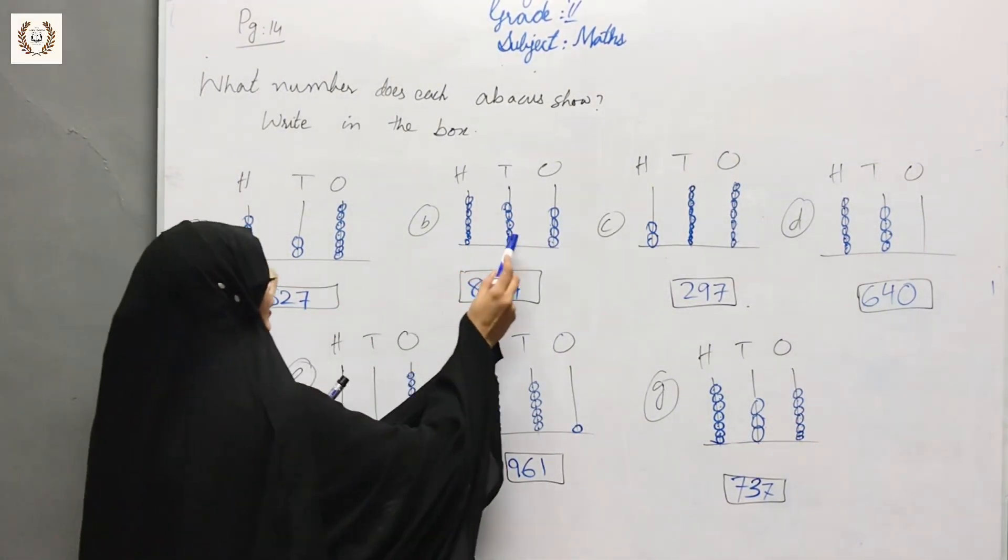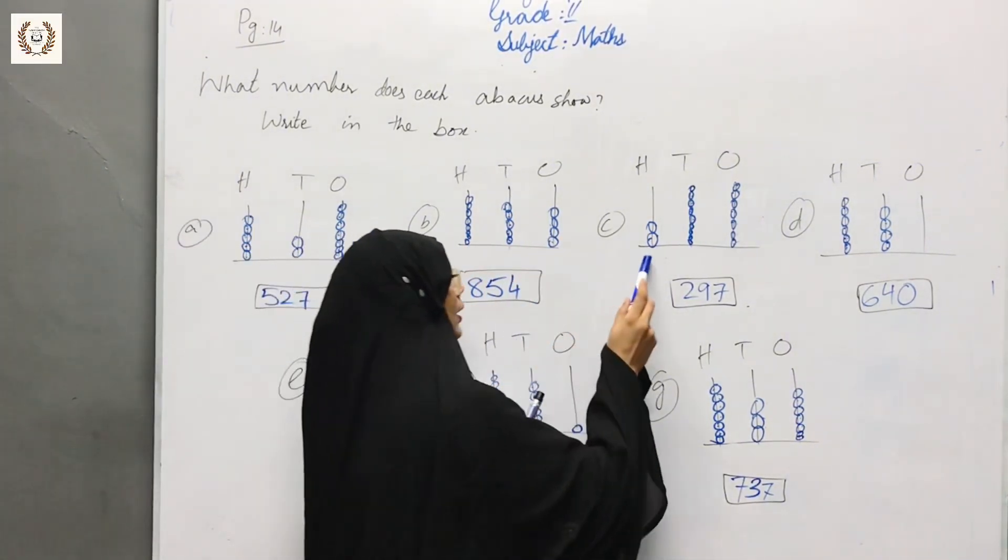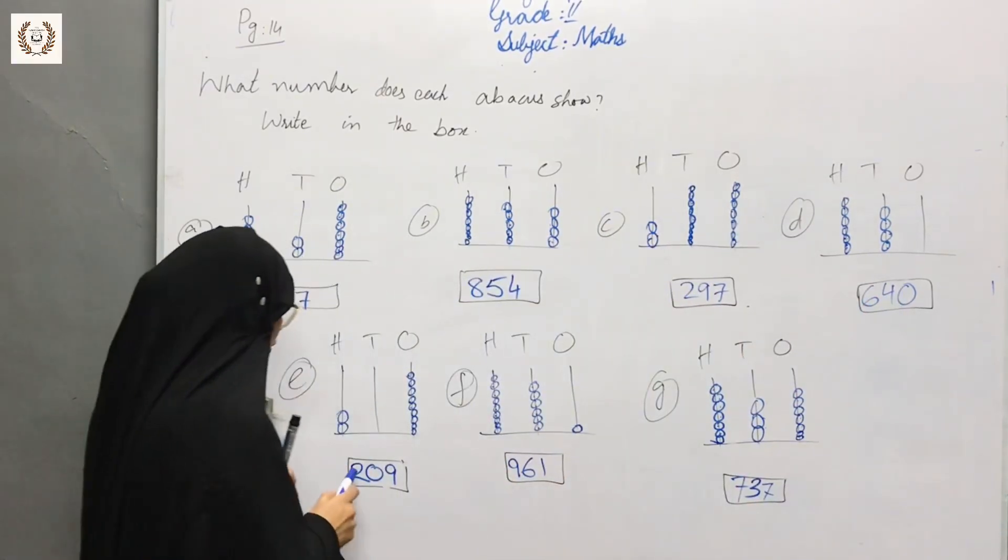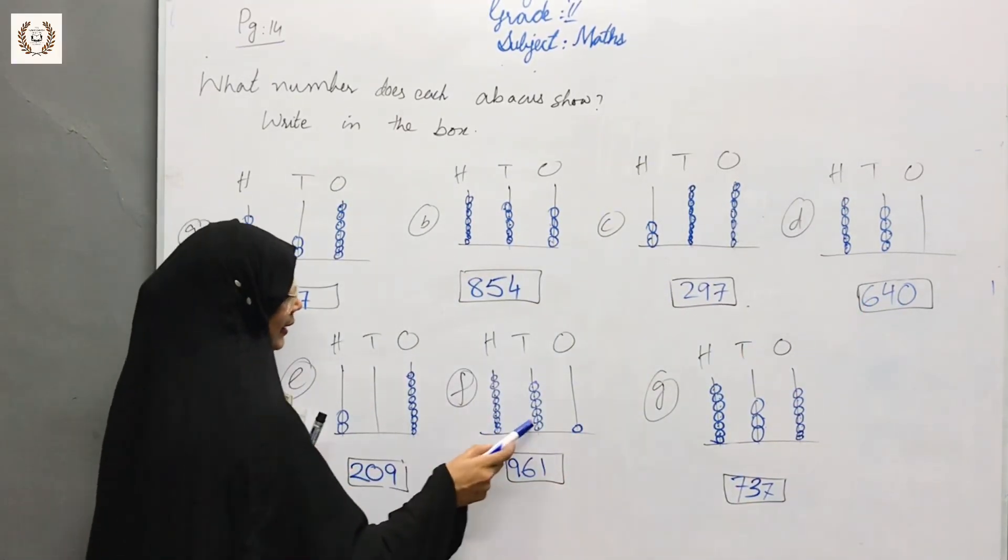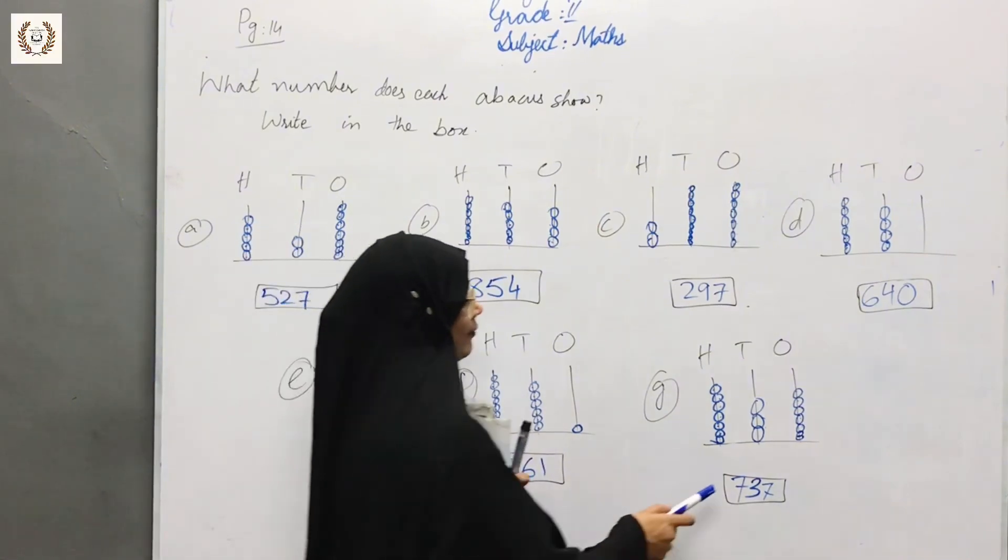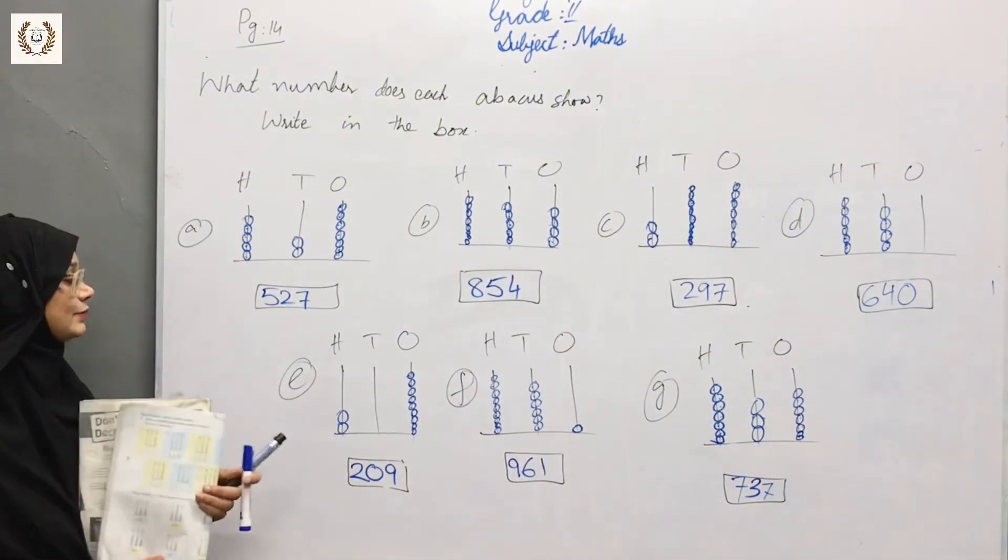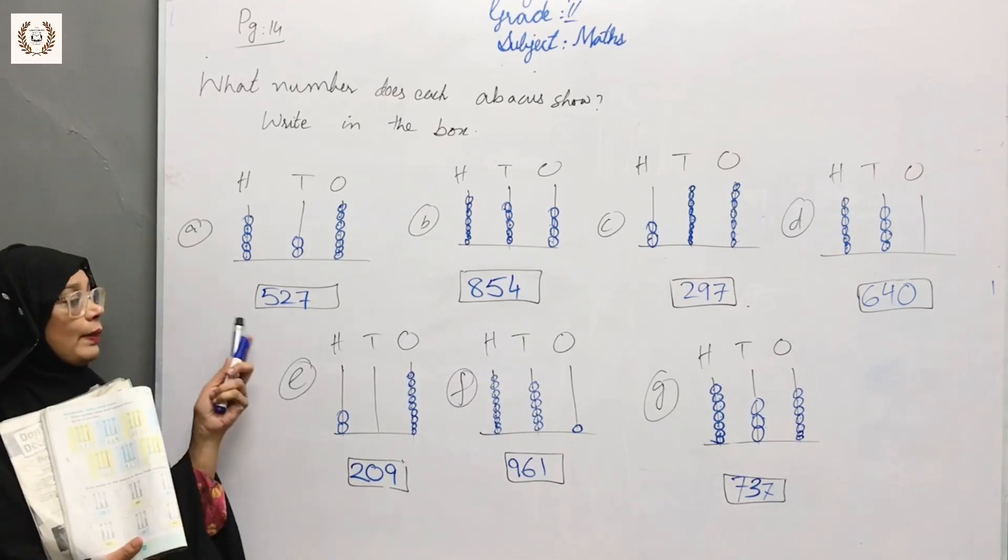So we had 527, 854, 297, 640, 209, 961, 737. We had beads in this exercise and we counted them.